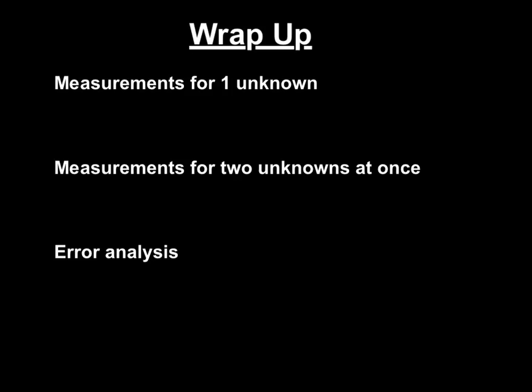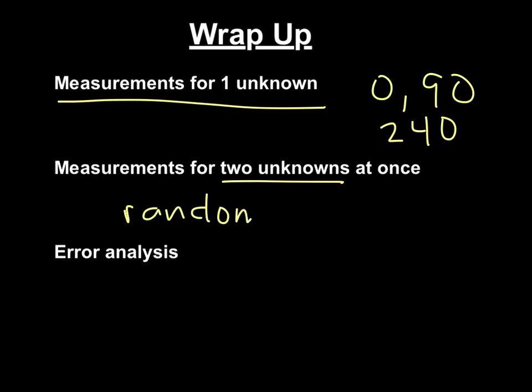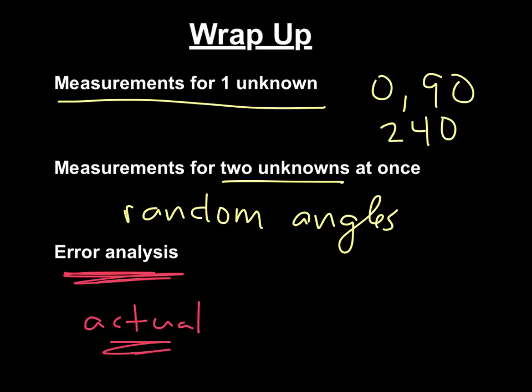Just to recap, you're going to do one unknown at 0, 90, 240. Two unknowns using what we'll describe as random angles. Be sure to measure your angles very carefully. Read between the lines on your angles. And your error analysis giving you your actual value, which is what you get from the balance, compared to your calculated value. That is the force table lab. Please ask any questions and hope this helps.